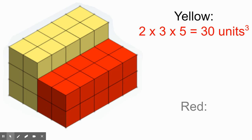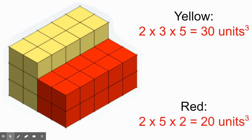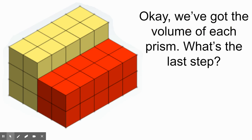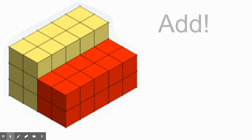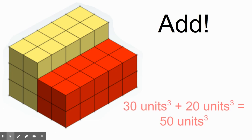For the red prism, it has a length of 5, a width of 2, and a height of 2. Multiplying those numbers gives a volume of 20 cubic units. Now that we've got the volume of each of the two prisms, the last and final step is we have to add them together. Our final answer is 50 cubic units, because the 30 cubic units of the yellow prism plus the 20 cubic units of the red prism gives us a combined volume of 50 cubic units.